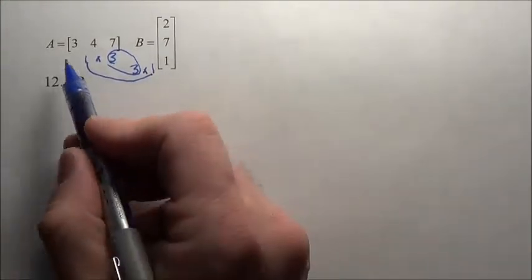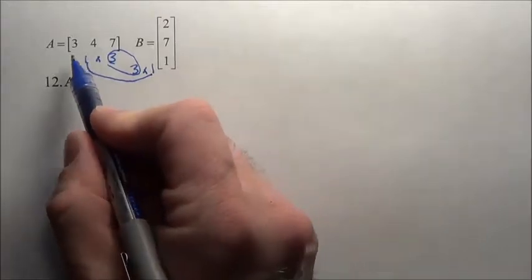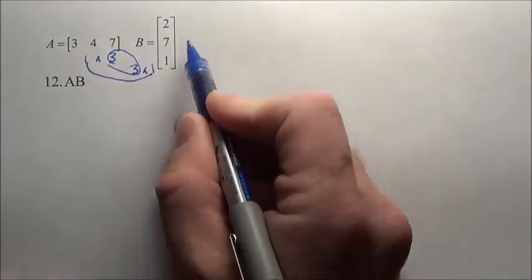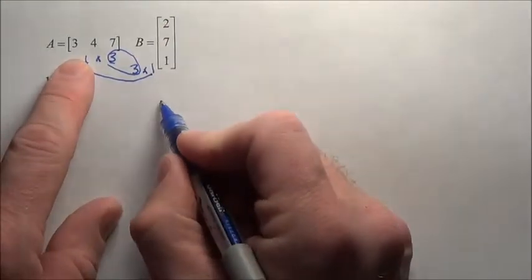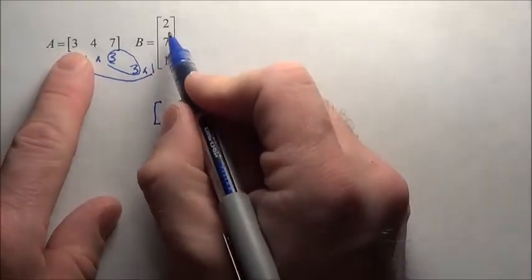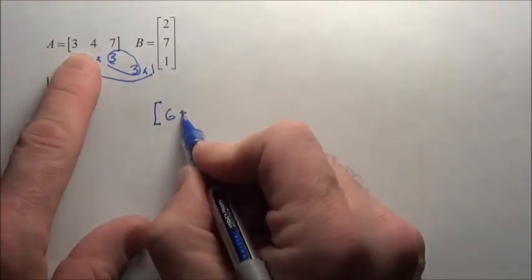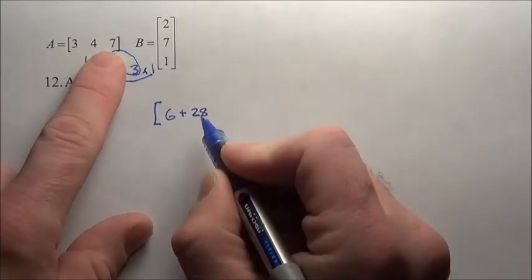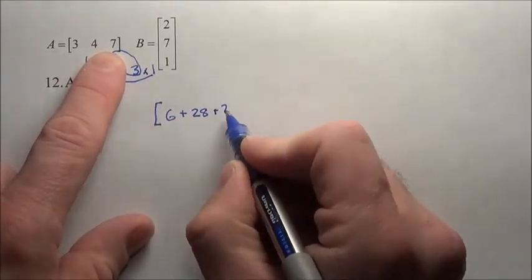So here's what's going to happen. Remember, when we multiply these, we do first row times the first column. So this answer is simply going to be, we do three times two is six plus the four times the seven, 28, and seven times the one, seven.